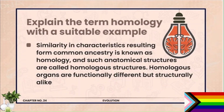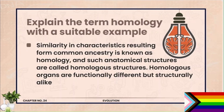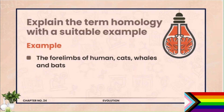Question number 5: Explain the term homology with a suitable example. Similarity in characteristics resulting from common ancestry is known as homology, and such anatomical structures are called homologous structures. Homologous organs are functionally different but structurally alike. For example, the forelimbs of humans, cats, whales, and bats — the bone arrangements are the same but the functions differ. These represent homologous structures and demonstrate divergent evolution.